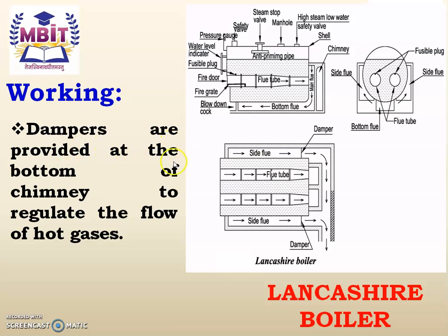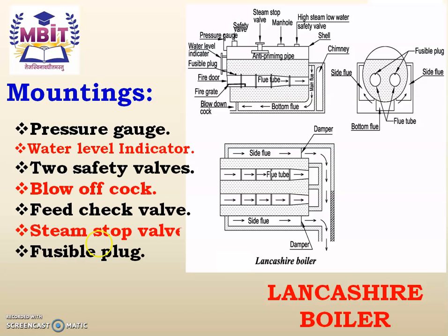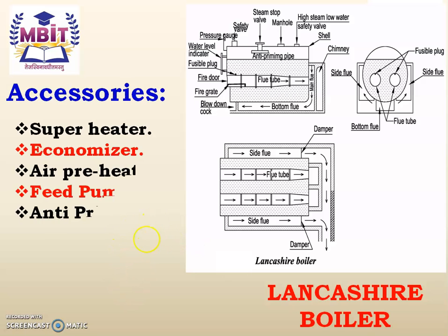Dampers are provided at the bottom of the chimney to regulate the flow of hot gases. The different mountings attached to this boiler are: pressure gauge, water level indicator, two safety valves, blow-off cock, feed check valve, steam stop valve, and fusible plug. The accessories that can be attached to the Lancashire boiler are: superheater, economizer, air preheater, feed pump, and anti-priming pipe.